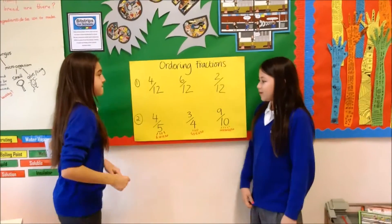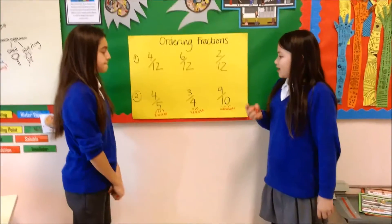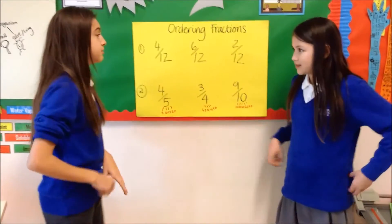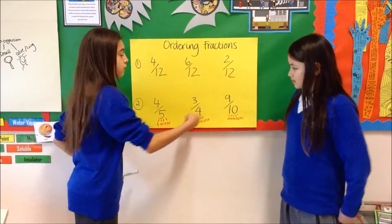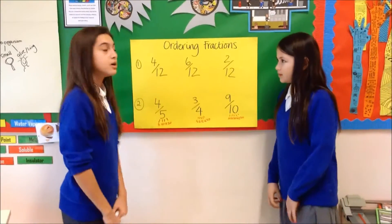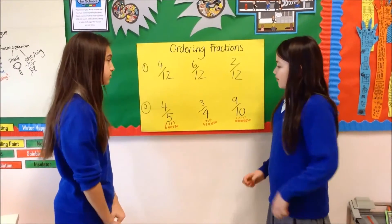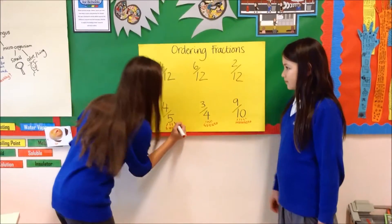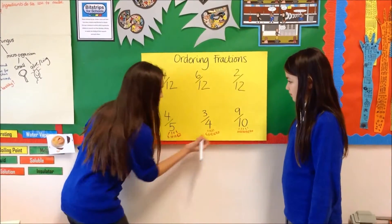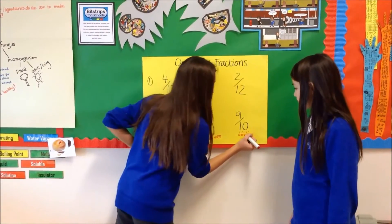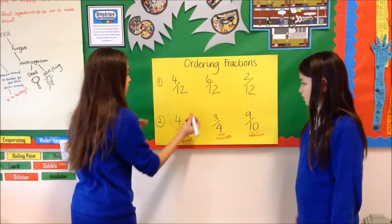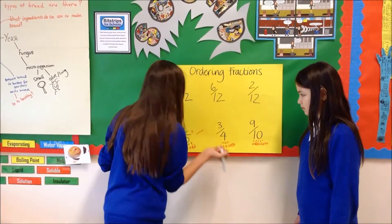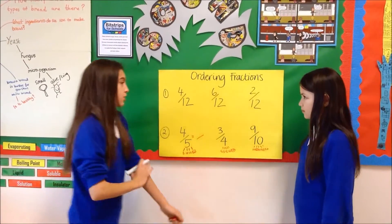So then what we need to do is find the common multiple for all of them. Now you can see it's all 20. So 5 times what equals 20? It's 4.